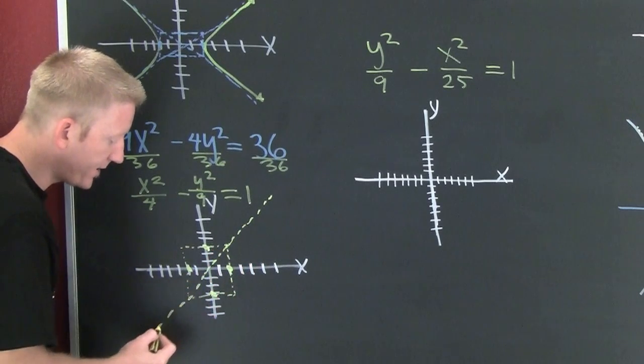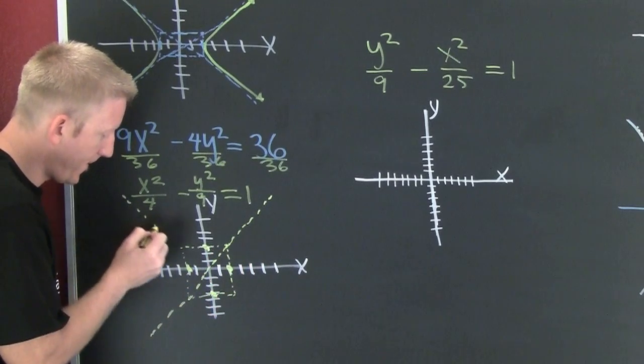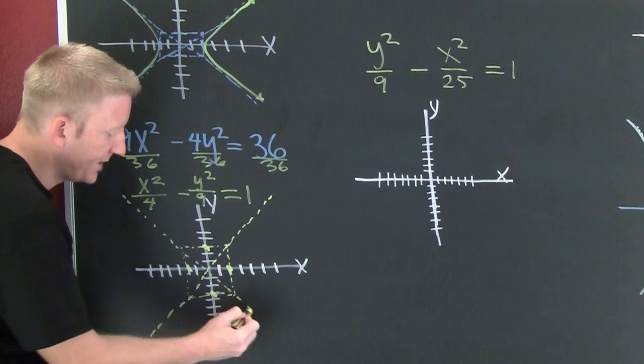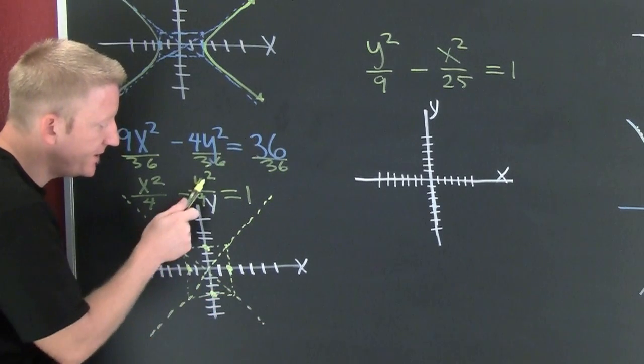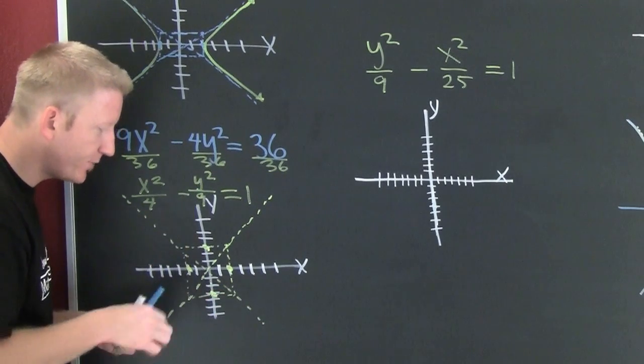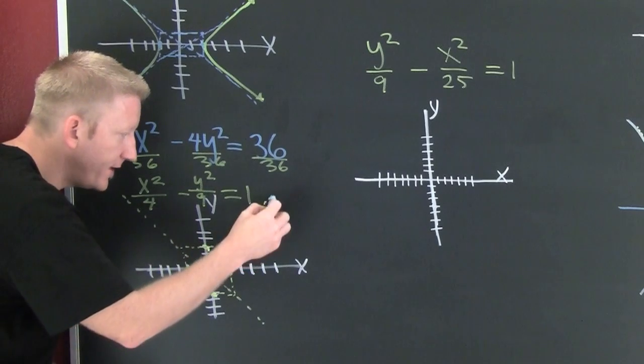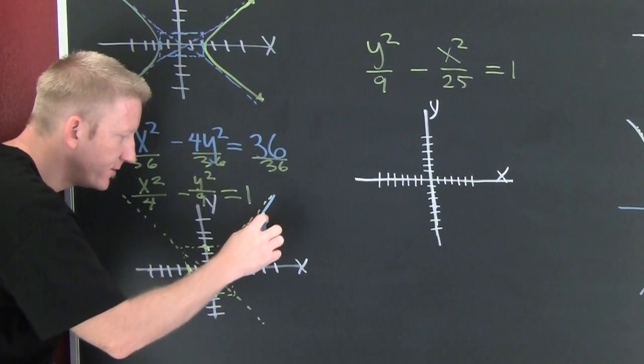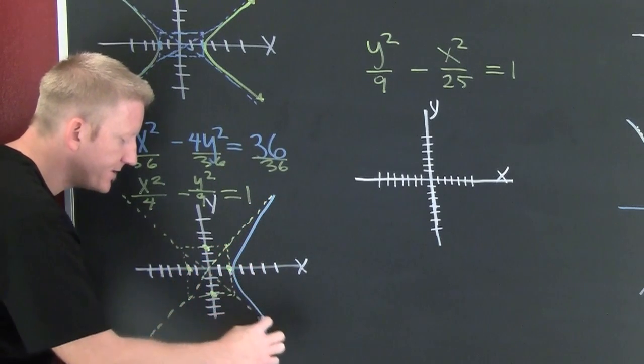The sign is negative on the Y, so it opens away from Y, and it's going to look like this.